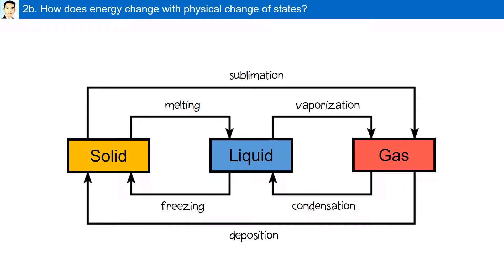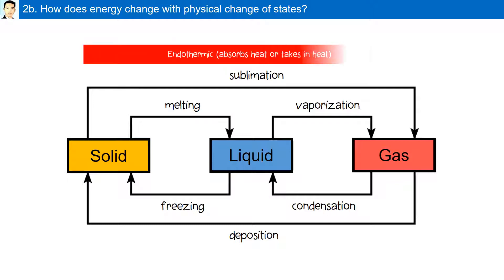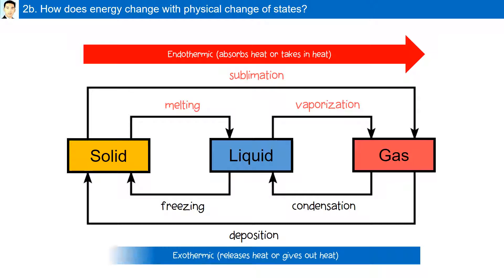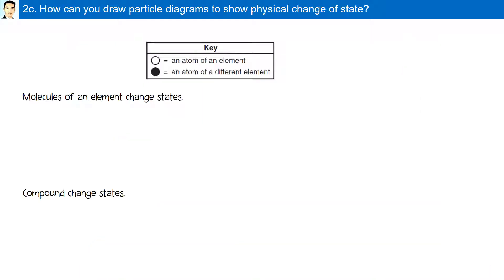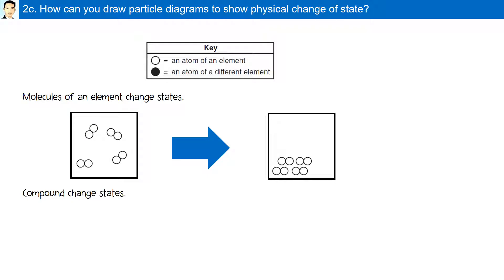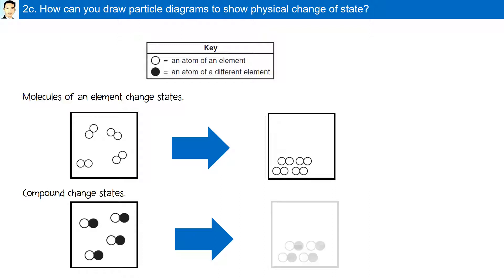How does energy change with physical changes of state? Going from a solid to a liquid to a gas is endothermic — heat is absorbed. While going back from a gas to a liquid to a solid is exothermic, with a release of heat. Particle diagrams can show molecules of an element or compound going from a gaseous state to a liquid state, illustrating a physical change of state.